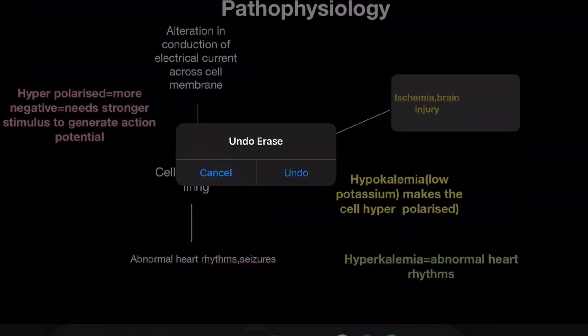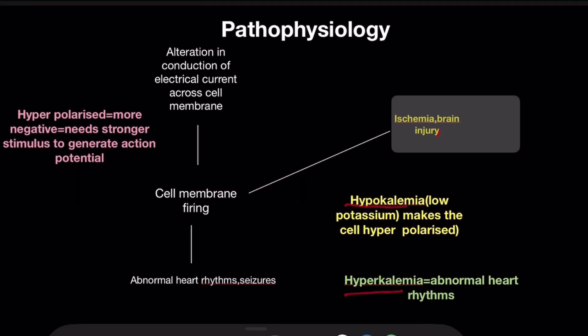In pathophysiology, any alteration in conduction of electrical current across a cell membrane — for example, any alteration in electrolyte concentration, ion concentration, or cell membrane permeability — will result in abnormal cell membrane firing. That means the cell becomes abnormally active. As a result, cells that normally do not generate any action potential begin to do so.